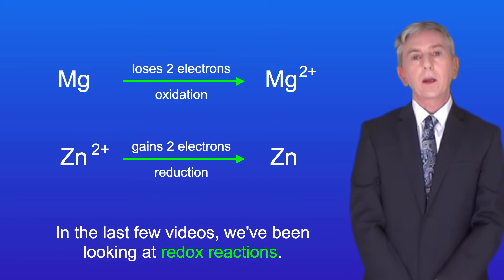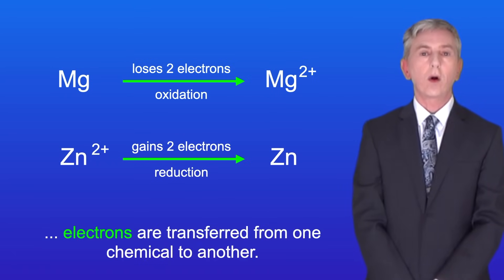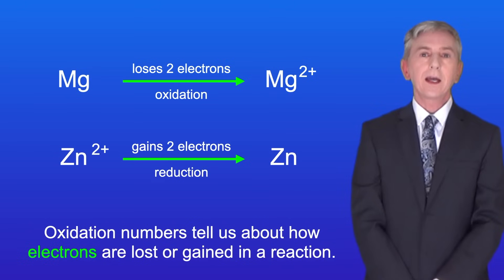In the last few videos we've been looking at redox reactions. We've seen that in redox reactions electrons are transferred from one chemical to another. Now one really important idea in redox reactions is oxidation numbers. Oxidation numbers tell us about how electrons are lost or gained in a reaction.